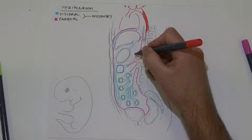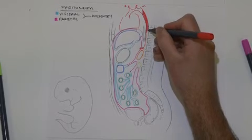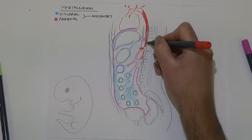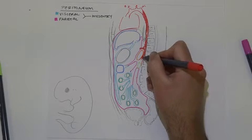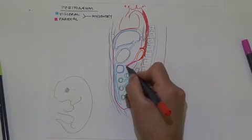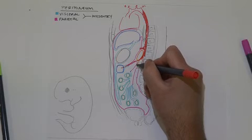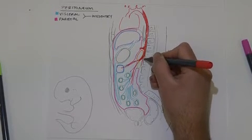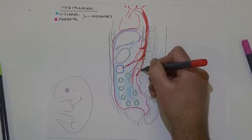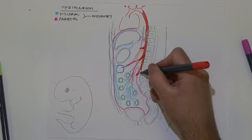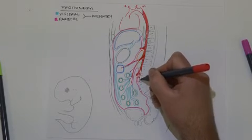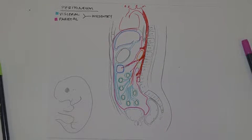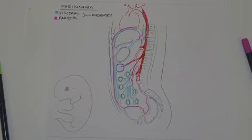The next branch emerges at the L1 level — this is called the superior mesenteric artery. The superior mesenteric artery supplies the midgut, giving a branch through the transverse mesocolon to supply the transverse colon, and also giving branches to the ileum and jejunum. Then at the L3 level we have the inferior mesenteric artery, which supplies the hindgut. Finally, at the L4 level — as we remember from weeks one and two — the aorta divides into the left and right common iliac arteries.